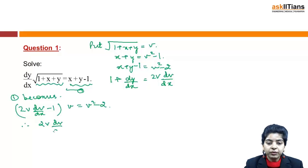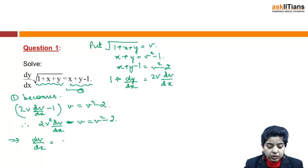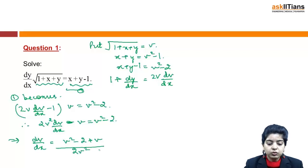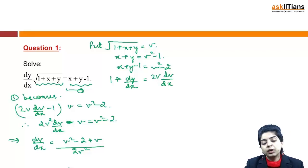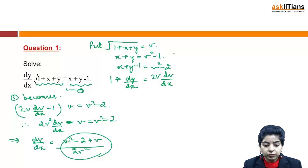Simplifying further: 2v · dv/dx = v² - 2 + v, therefore dv/dx = (v² + v - 2) / (2v). This is the final value of dv/dx. Now to find the solution, we can separate the two variables — all v terms on one side with dv, and dx on the right-hand side — reducing it to variable separable form. So we have 2v² on the left side.